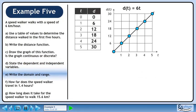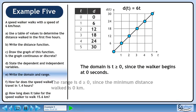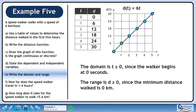In Part E, we will write the domain and range. The domain is t is greater than 0, since the walker begins at time equals 0 seconds. The range is d is greater than 0, since the minimum distance walked is 0 km.